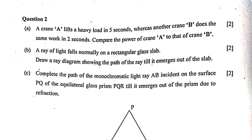Question 2a: Crane A lifts a heavy load in five seconds whereas crane B does the same work in two seconds. Compare the power of crane A to crane B. Since power equals work done divided by time, PA/PB = 2/5, so PA : PB = 2 : 5.